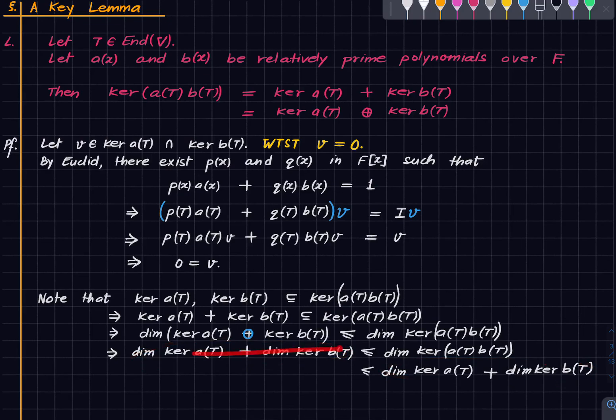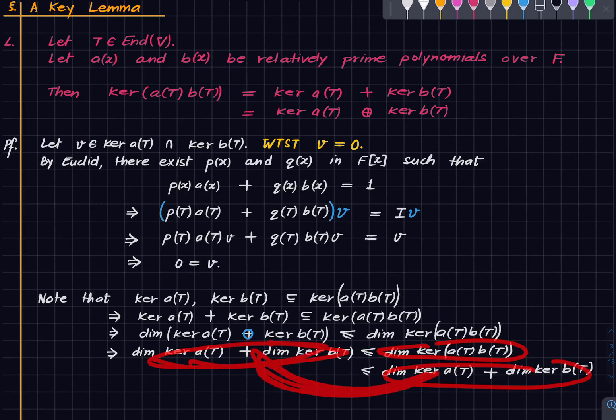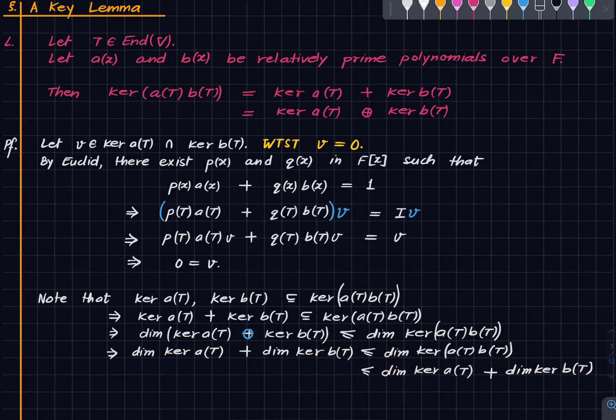And we see that this is equal to that. So the sandwich that we have, this is less than that is less than that. This is a sandwich because this and that are equal. It means that this must be an equality, and if you just think about it, this must be an equality and this containment hence cannot be a proper containment. But this containment is actually an equality. And that establishes this fact. And we are done.